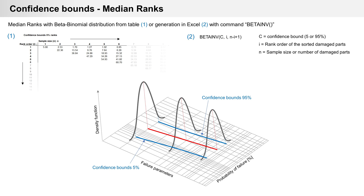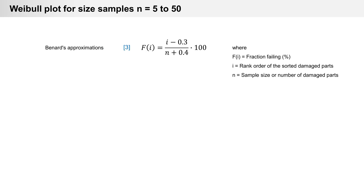Here you can see the red curve is the Weibull distribution, and the two blue curves are the median ranks at 5% and 95%. For tests with small sample sizes n less than 15, Bernard's approximation can be used.